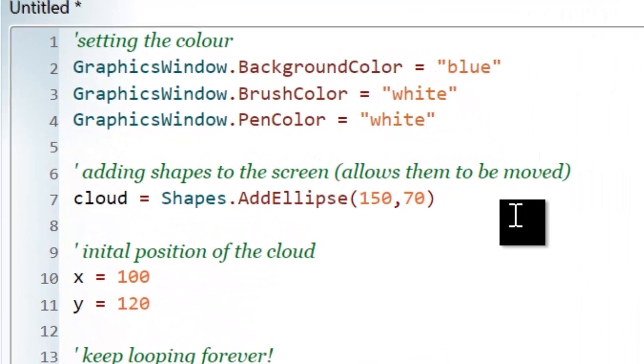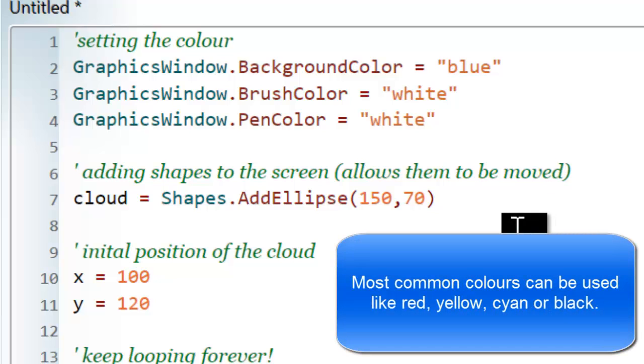The first part of the code, from lines 1 to 4, is setting the color of the background, which is blue, the brush color and the pen color. The difference between brush and pen is the brush is what we fill in a shape with and the pen is the outline color or line color. I've set both to white because I want the cloud to be completely white with a white outline as well.